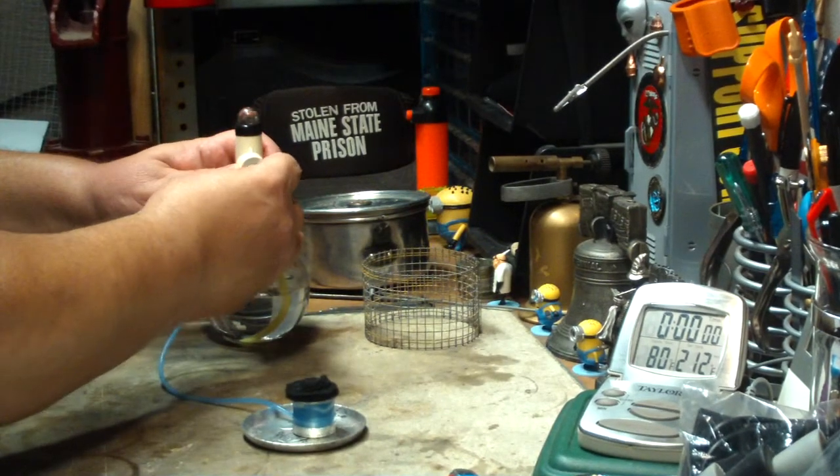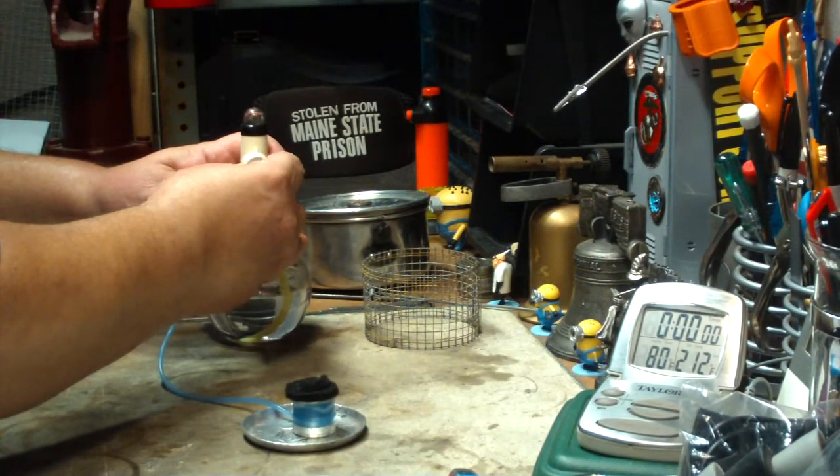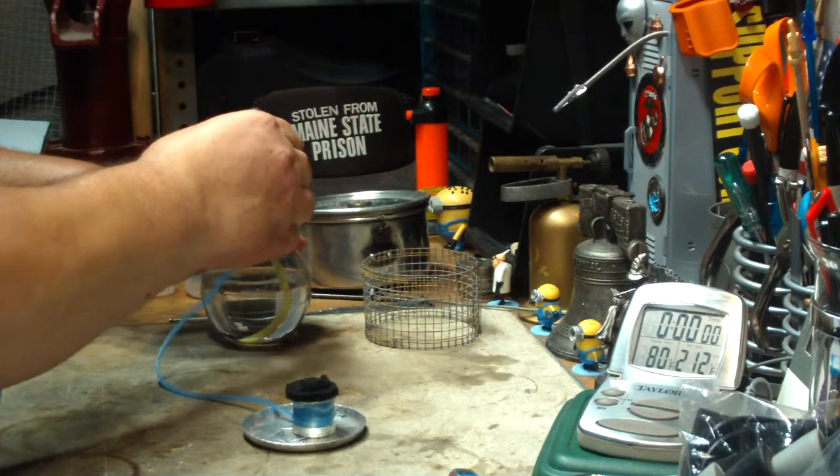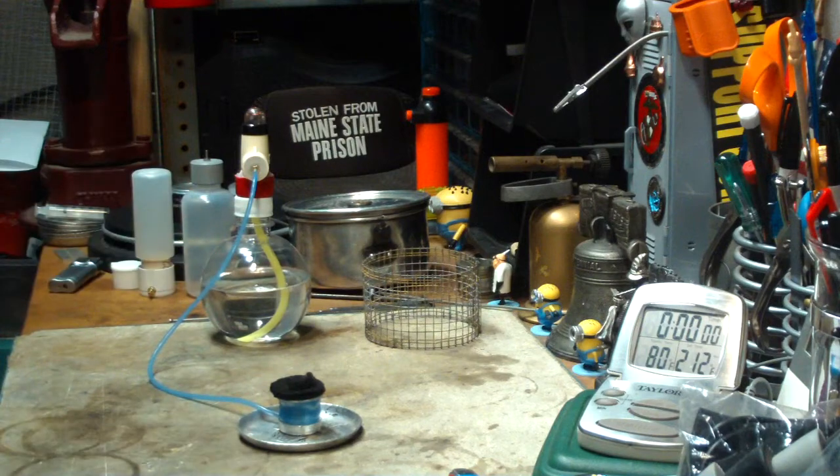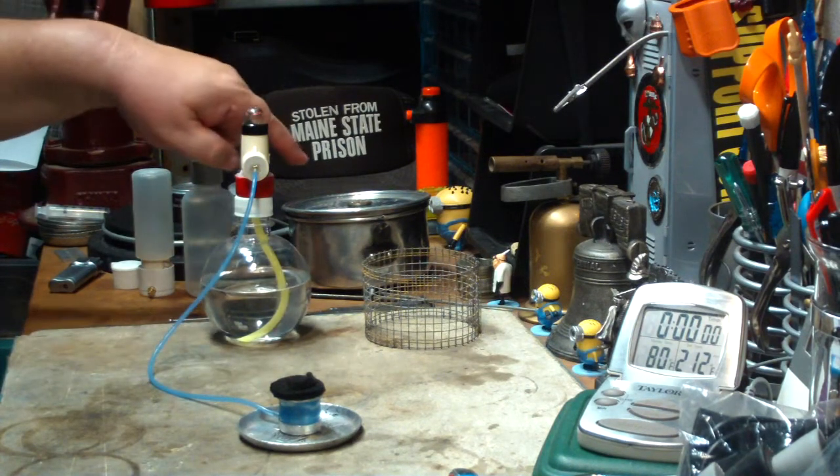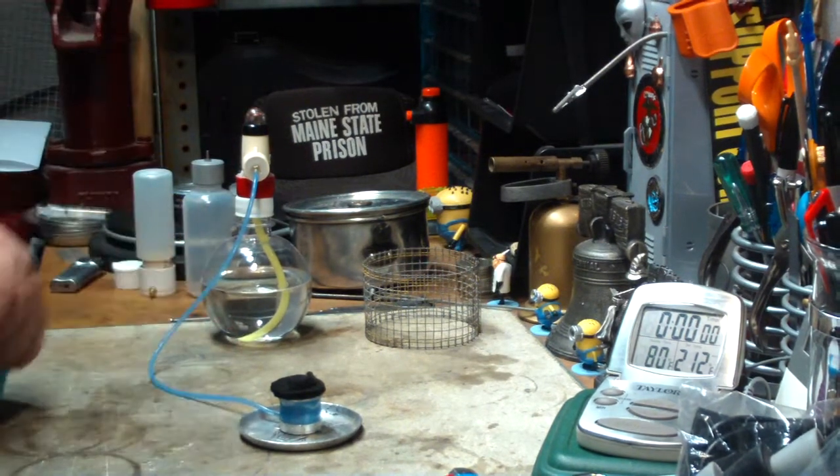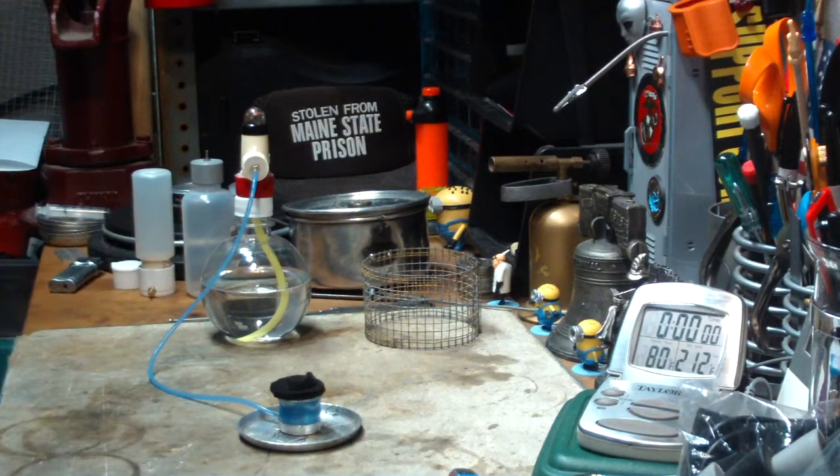So I'm going to try this today for one last time. See if keeping the donut part of the wick wet, if that helps the boil time. So let me get my water prepped, I'll get some alcohol in here, and I'll be right back for a test.